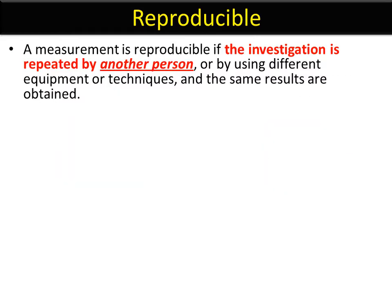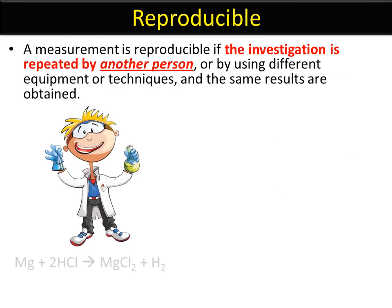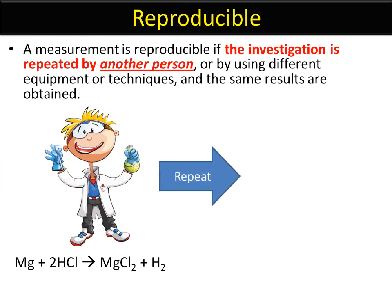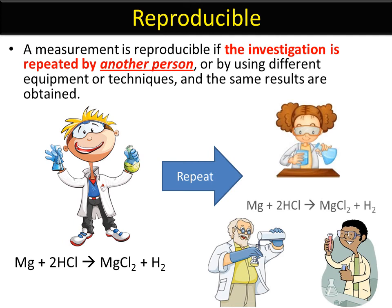A result is reproducible if the original experimenter does the experiment, but many other people can also find the same result. So repeatable is if the original experimenter can redo the result. Reproducible is when other people can do the same experiment and find the same result.